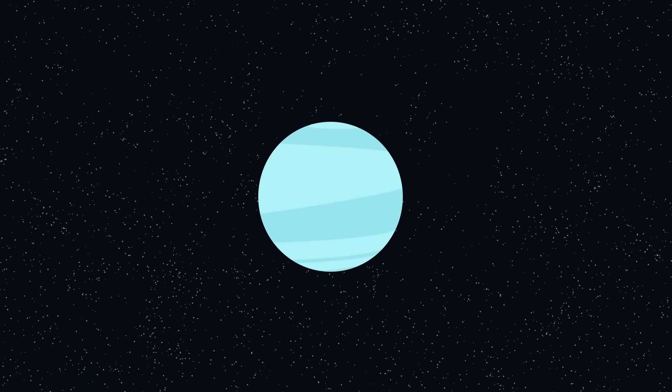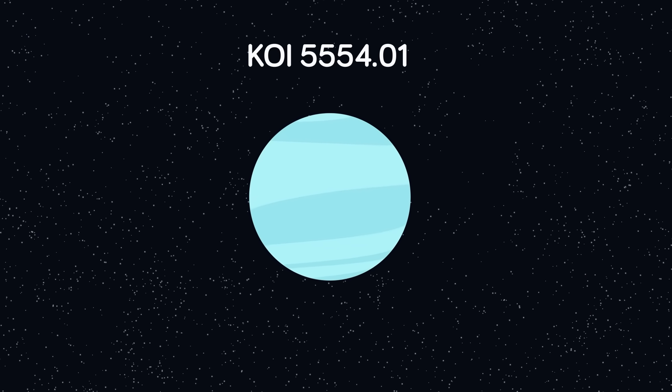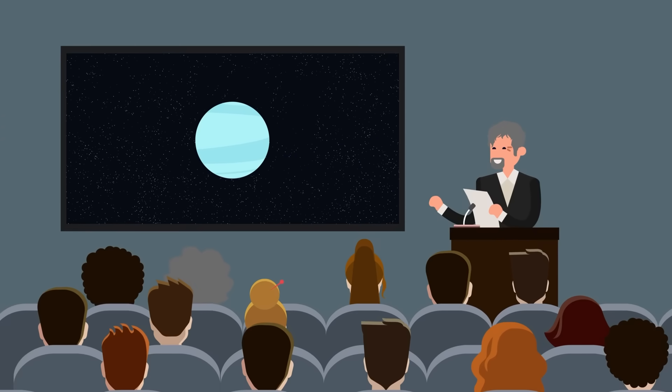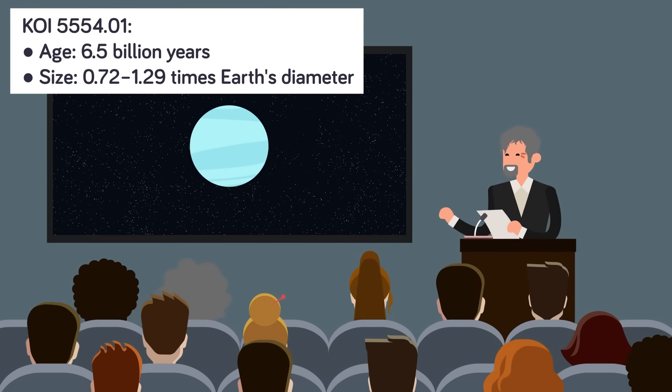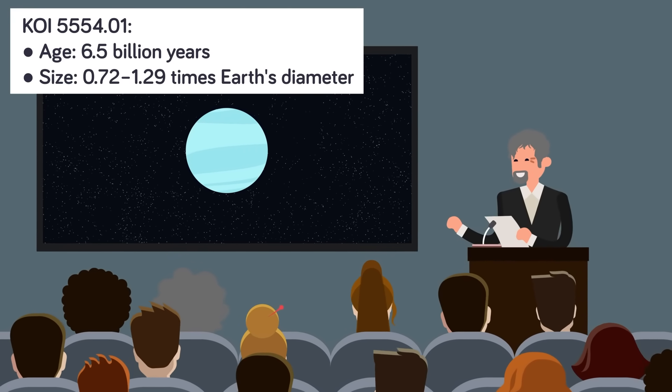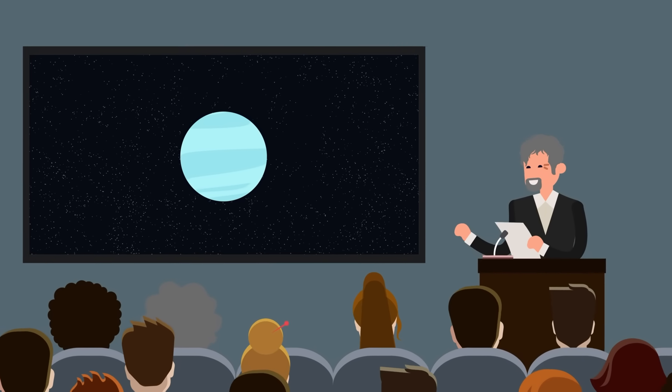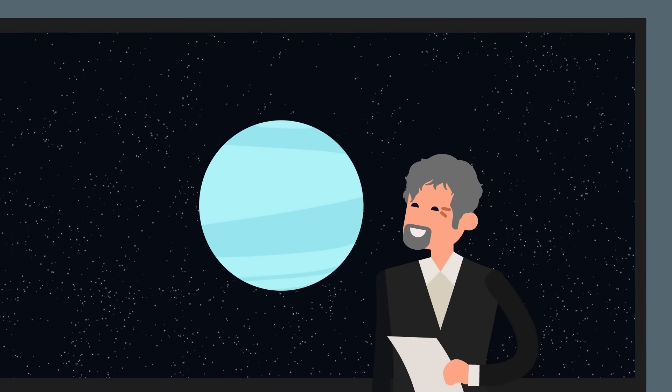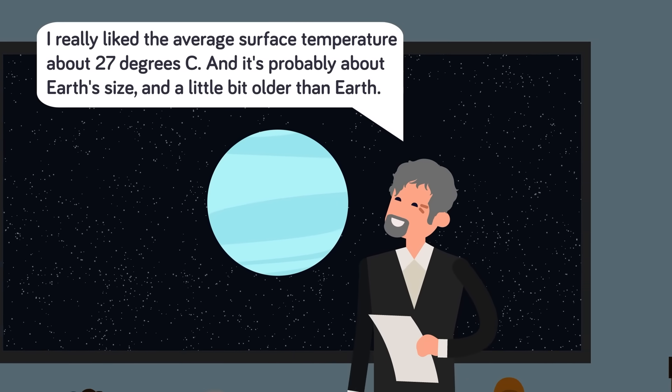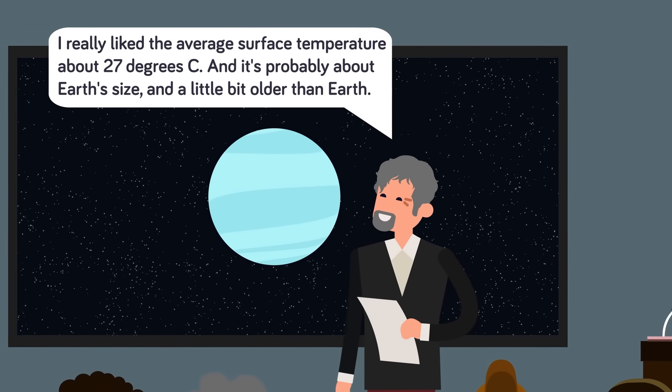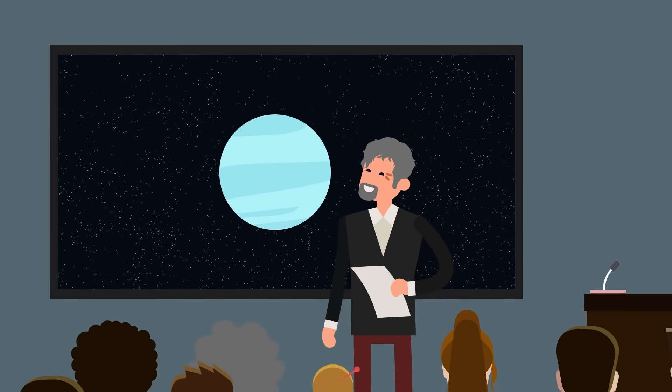Schulze-Makuch's favorite of the 24 potentially superhabitable planets was one called KOI 5554.01. This planet is approximately 6.5 billion years old, and has a diameter of between 0.72 and 1.29 times that of Earth. It orbits a yellow dwarf around 700 light-years from Earth. Of this favorite planet, Schulze-Makuch says, I really like the average surface temperature, about 27 degrees Celsius, and it's probably about Earth's size, a little bit older than Earth. Why don't you get a room with old KOI 5554.01, Dirk?